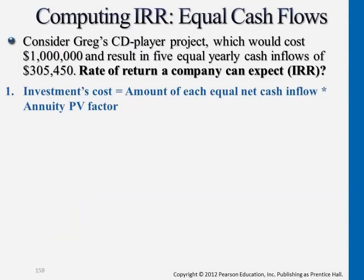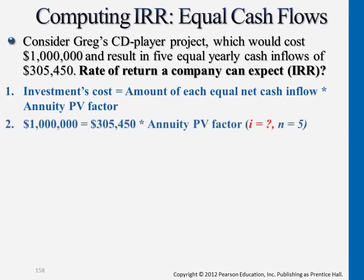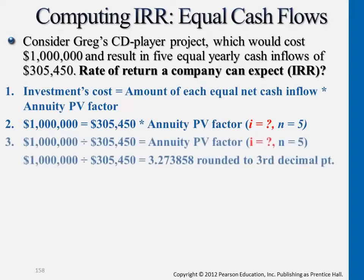We set the NPV at zero. Take this as an example: if we have an initial cost of a million dollars, we assume every single year we have a return of about $300,000 for five years. This is the concept of annuity. To get the IRR, we set the NPV at zero and then put the return we're anticipating to get, times the PV factor, which is the one you'll be tracing to the table to find I.